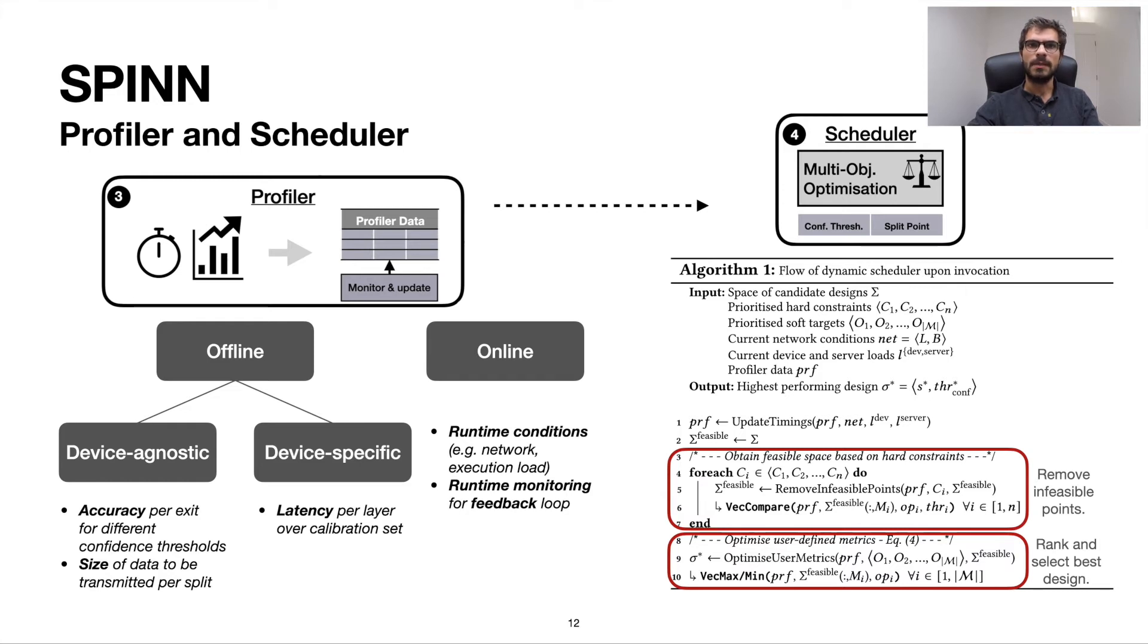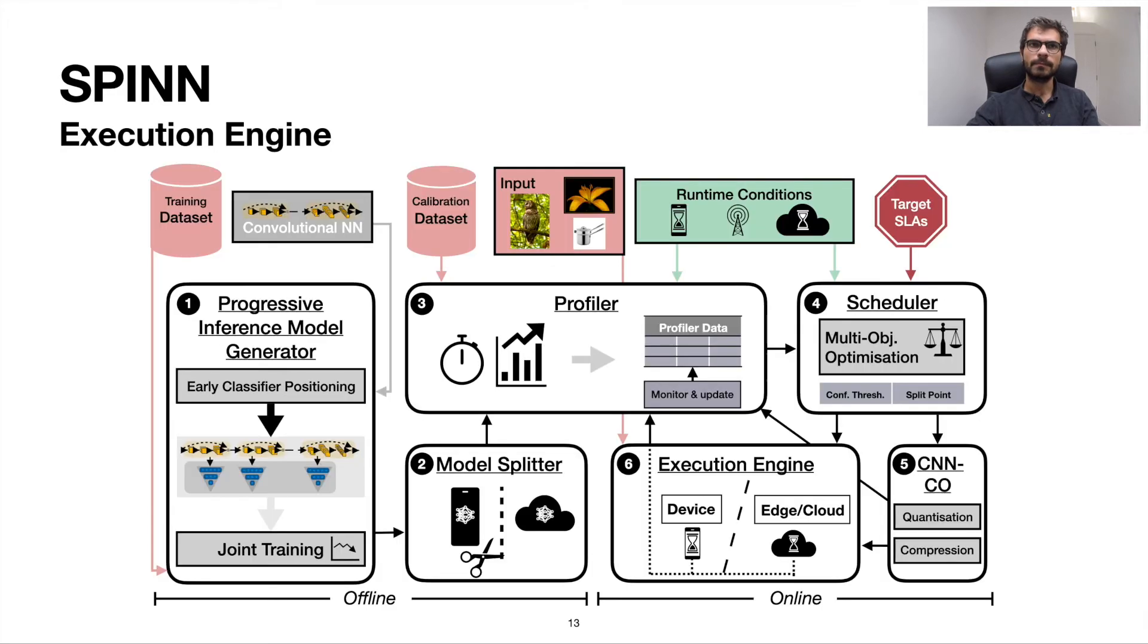Upon deployment, the scheduler is run on the client side, since most relevant information resides on device, and is only invoked when the outputs of the profiler are significantly changed. But what happens during execution?